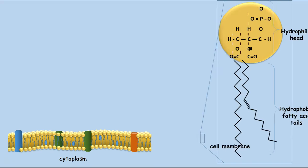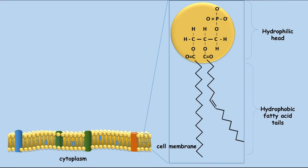The phospholipids have a hydrophilic head that is ester-linked to two hydrophobic fatty acid tails. As a side note, ester linkages are also found on all eukaryotic phospholipids, but not in the archaea phospholipids. Archaea phospholipids will have an ether linkage. More on this when I discuss the archaea in a separate video.